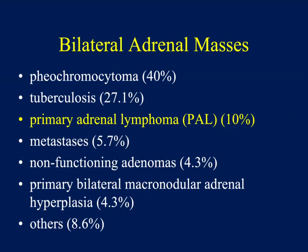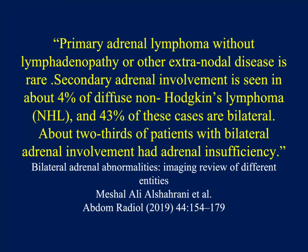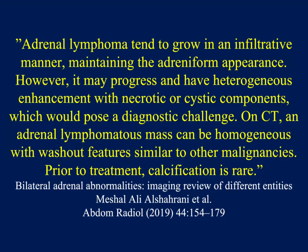With primary adrenal lymphoma, you often do not see any other disease — no liver, no spleen, no adenopathy. Cinematic rendering very nicely shows the texture mapping between the right and left adrenal gland. In the differential of bilateral adrenal masses: pheos, infection like TB, mets, adenomas, and lymphoma. So primary adrenal lymphoma: big masses, triangular shape, looks like the adrenals, but there are no other findings. Adrenal lymphoma tends to grow in an infiltrative pattern maintaining the adrenal form appearance — it gets really large but kind of looks like an adrenal shape. Mets, ACC, and pheos don't do that.